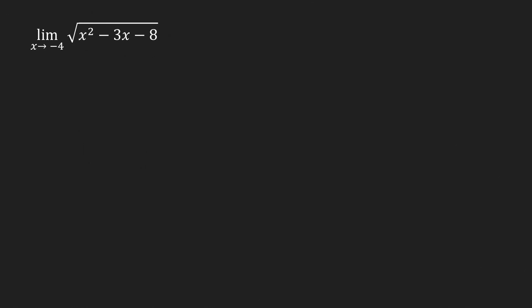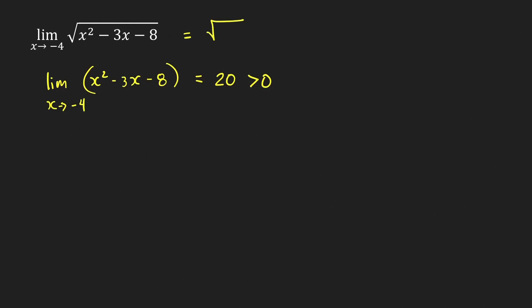Now let's find the limit of the square root of that same function as x approaches negative 4. We already know the limit of x² - 3x - 8 as x approaches negative 4 is 20. Since this is a positive number, we can use the limit theorem: the limit of the square root of a function equals the square root of the limit. So we get square root of 20, which simplifies to 2√5.